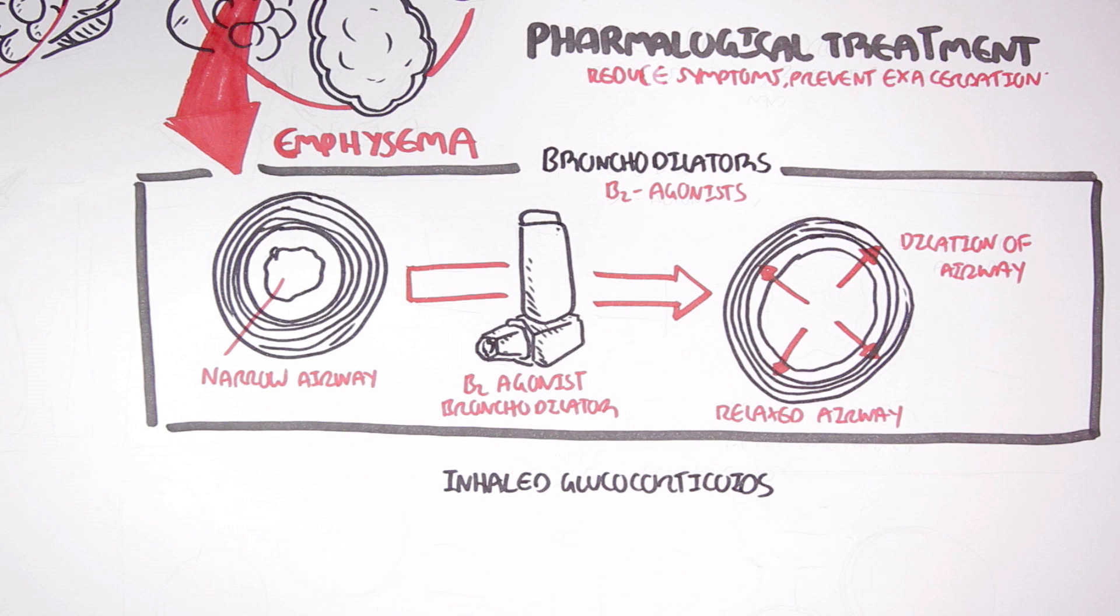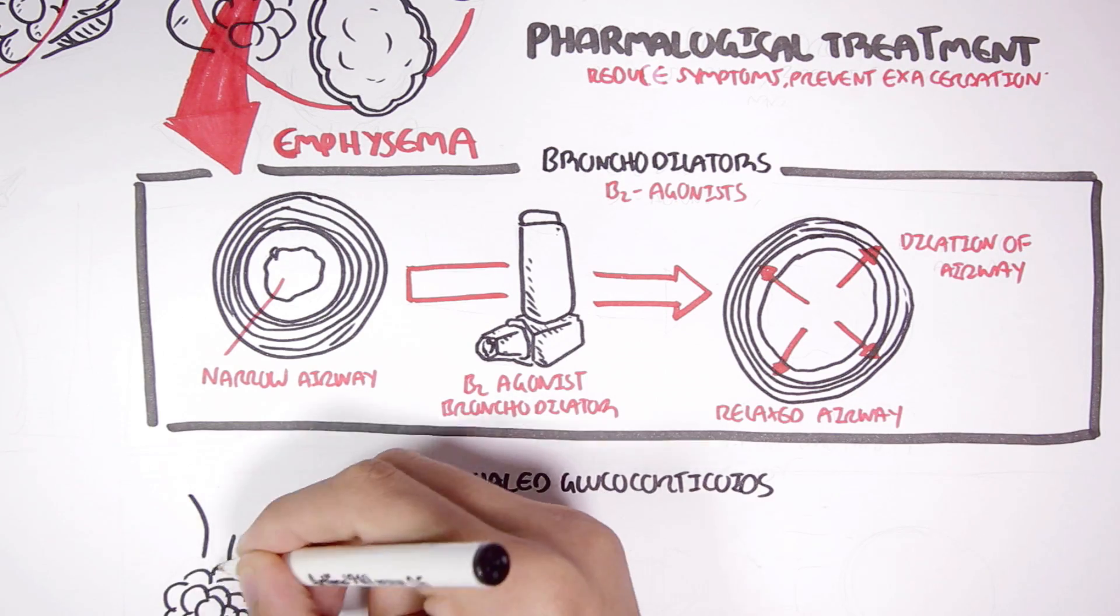Glucocorticoid inhalers can also be given to a person with emphysema to treat the exacerbation periods. These are painful periods when the symptoms are more severe and prominent. Administration of glucocorticoids, which is an anti-inflammatory drug, will decrease the pain caused by inflammation associated with emphysema.